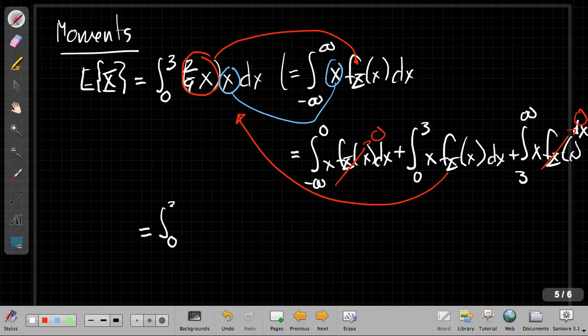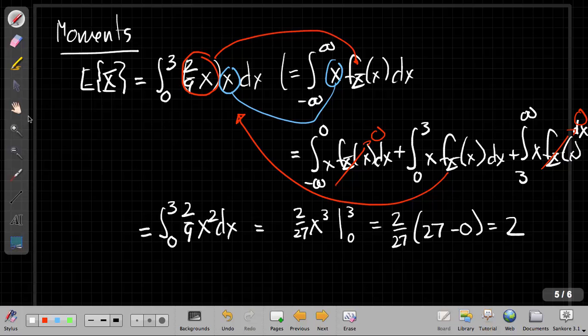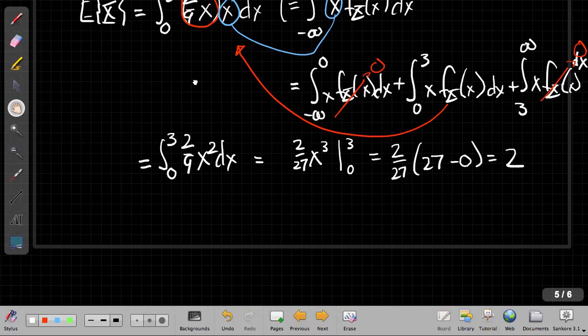And so now, to find the expected value of X, I've got the integral from zero to three of 2/9 X squared dx. This is equal to, I've got an X cubed, so I have, what's going to be, the integral of that is 2/27. So when I multiply that out, I get 2/27 the integral from zero to three. Put in three, this is 27, so I get 2/27 times 27 minus zero. So the expected value of X is 2.